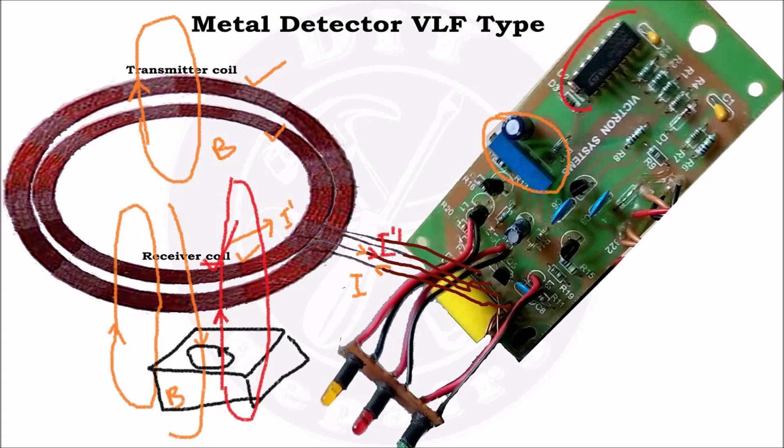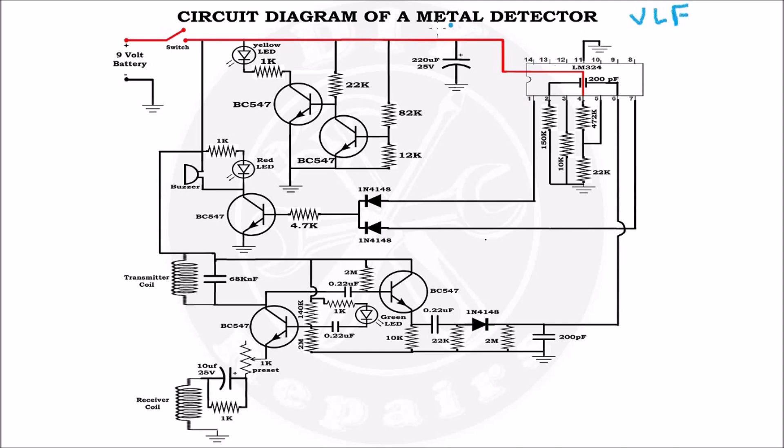This current is then sent to an operational amplifier for comparison. The greater the phase shift, the greater the beep sound we hear. Phase shift refers to the difference between the transmitted and received signals. This is the circuit diagram of a very low frequency metal detector.